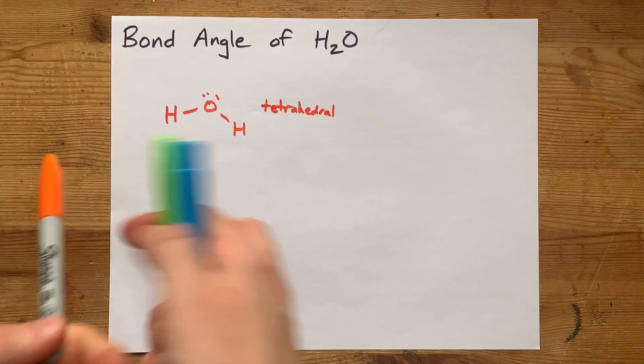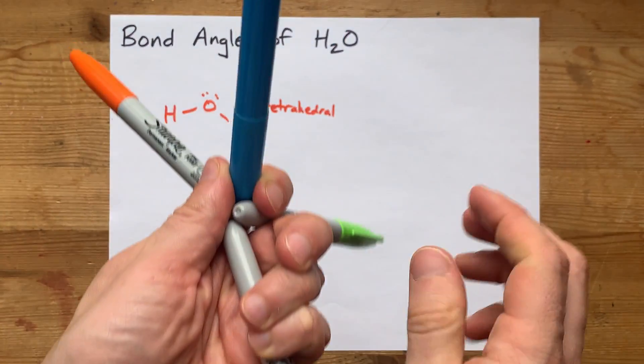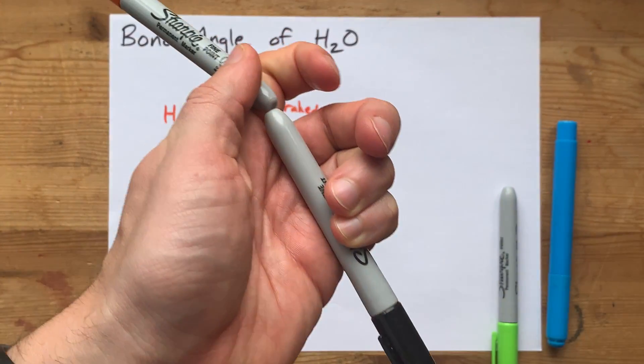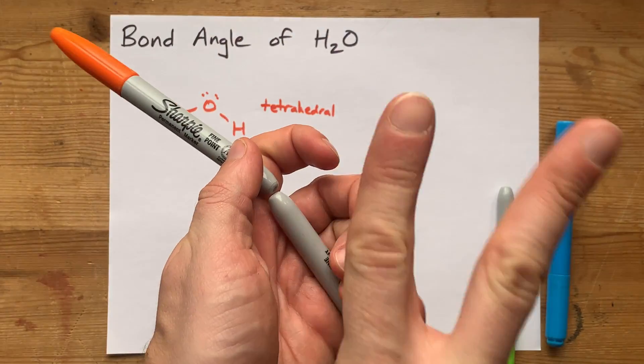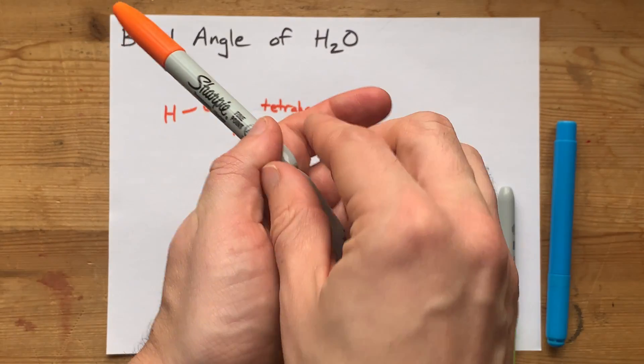Now, the only problem is that two of those things, one, two, happen to be lone pairs, which take up space energetically,